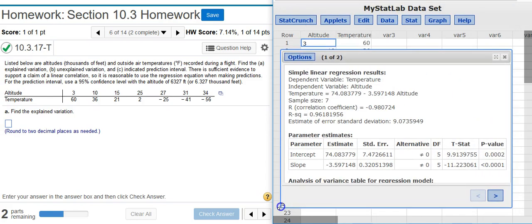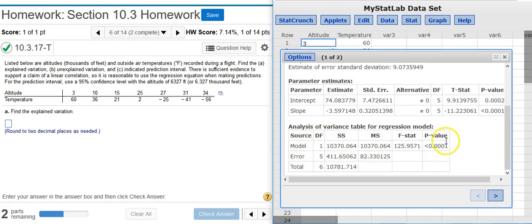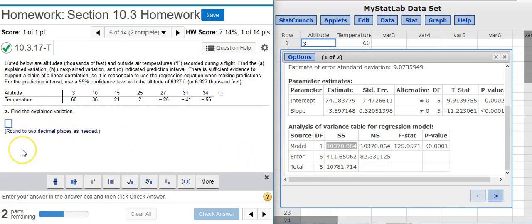And here we have our results window. If I scroll down here, you can see my ANOVA table for the results. So, the explained variation is the sum of the squares for the model. So, that will be this number right here. So, I round that to two decimal places for my answer field.